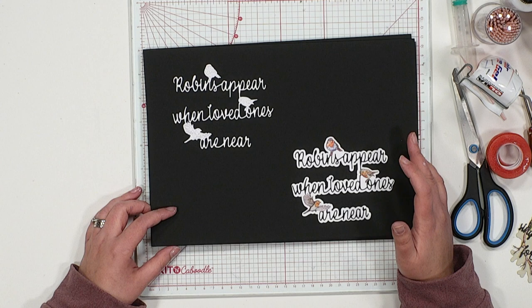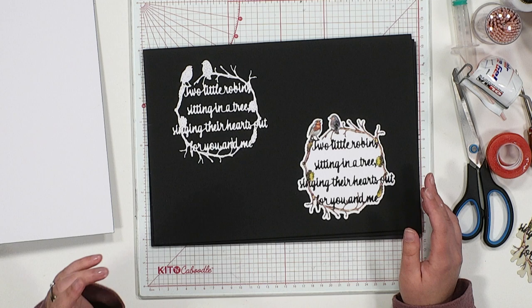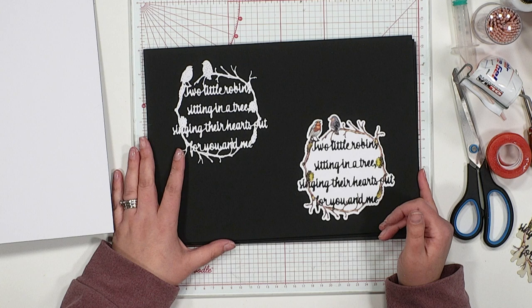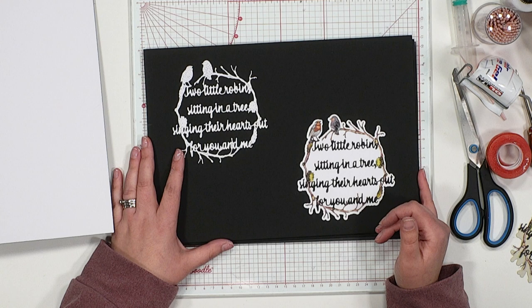The next die included within this collection, just take a look at this, absolutely stunning. This one here is Two Little Robins and it reads: Two Little Robins sitting in a tree, singing their hearts out for you and me.